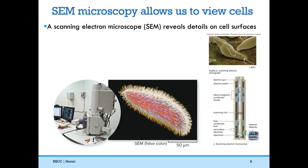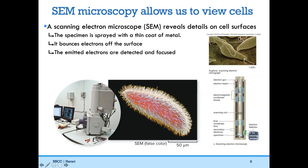Another type is the scanning electron microscope, SEM — remember S for surface, because it reveals details on the surfaces of cells. The specimen is first coated with a thin layer of metal, then electrons are bounced off that surface, detected on a screen, and an image is taken. Here you can see the 3D surface of a Euglena cell, which is remarkable.